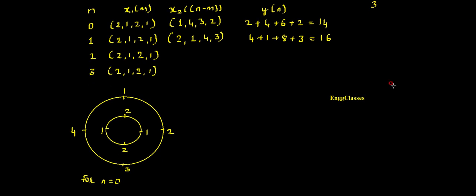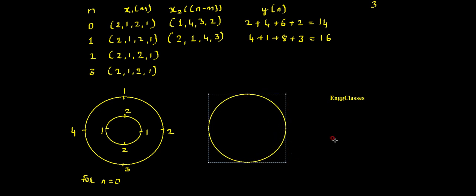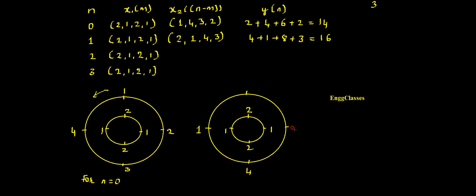Again this can be explained using the concentric ring method. I draw two circles — inner circle samples remain {2, 1, 2, 1}. The outer circle (x2(-m)) is now rotated by one position: 1 moves to the next position, so we get {2, 1, 4, 3} on the outer ring. Multiplying corresponding samples: 2×2=4, 1×1=1, 2×4=8, 1×3=3 — summing confirms y(1) = 16.